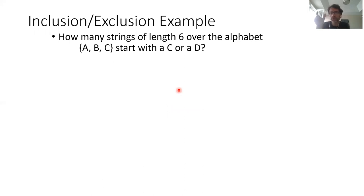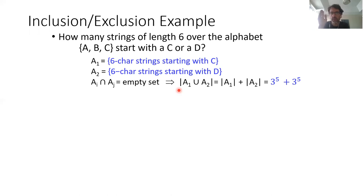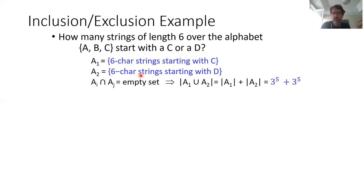Example: strings of length six over alphabet A, B, C that either start with C or start with D. These two sets are disjoint — no word can start with both C and D. So you count independently. You fix one character; the remaining five are free from three choices, giving three to the fifth for each set. So the answer is two times three to the fifth.